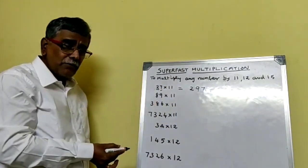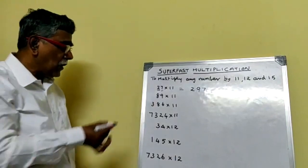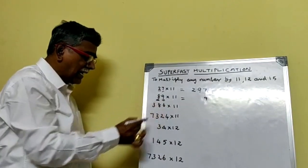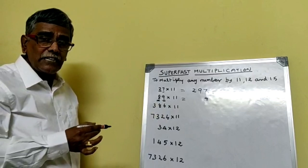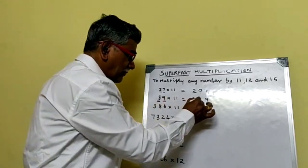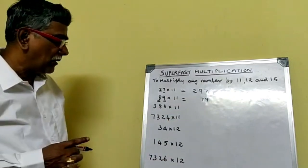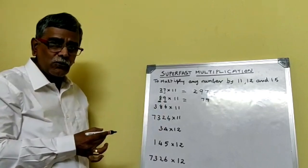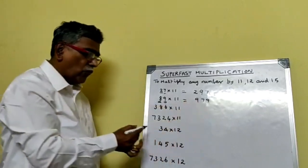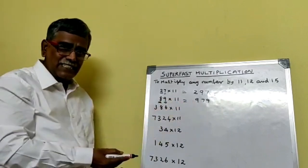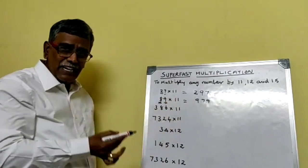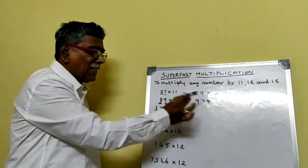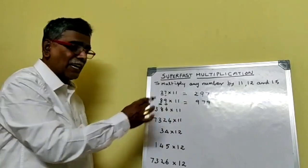Take another example: 89 into 11. You put the unit digit 9 as it is. Then add the 2 digits: 9 plus 8 is 17. Take the unit digit of 17, which is 7. Keep the balance 1 in your mind. Then leave 9 and add that 1 with 8: 1 plus 8 is 9. So the answer is 9, 7, 9 — that is, 89 into 11 equals 979.